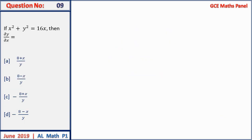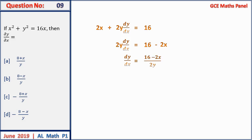Question 9: given x² + y² = 16x, find dy/dx. Differentiating implicitly: 2x + 2y·(dy/dx) = 16. Making dy/dx the subject: 2y·(dy/dx) = 16 − 2x, so dy/dx = (16 − 2x)/(2y) = (8 − x)/y. Answer is B.